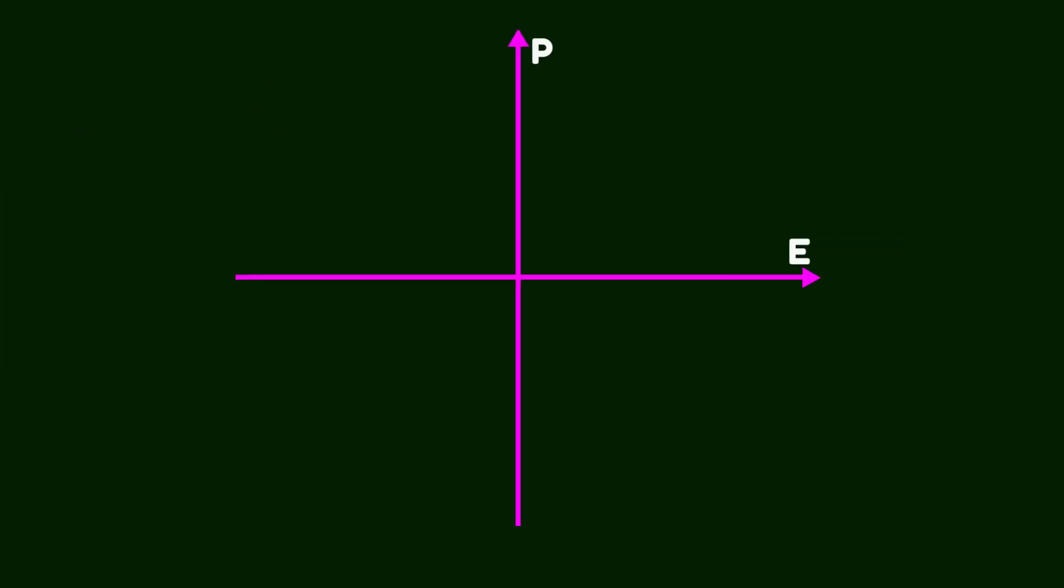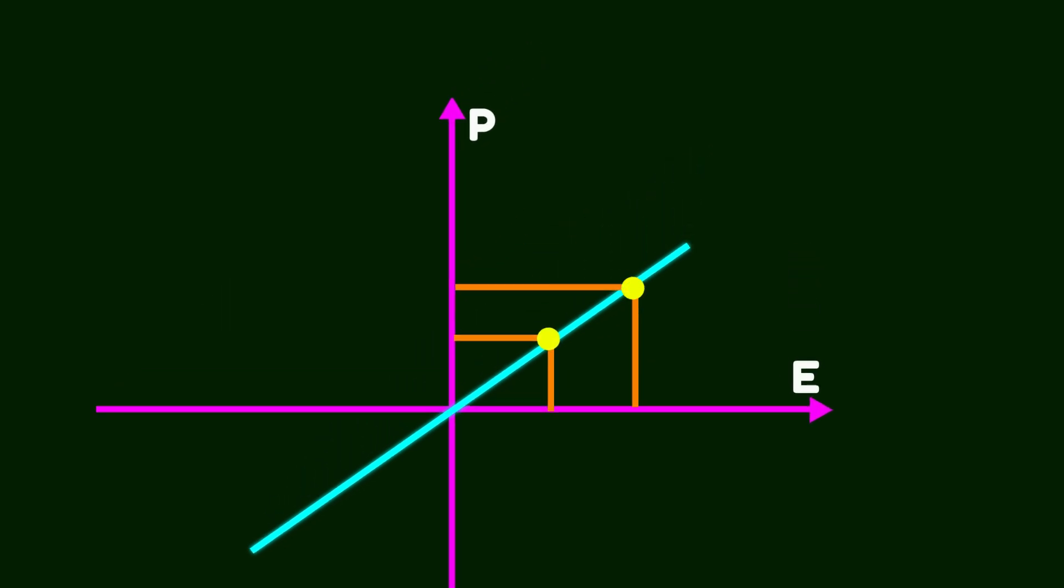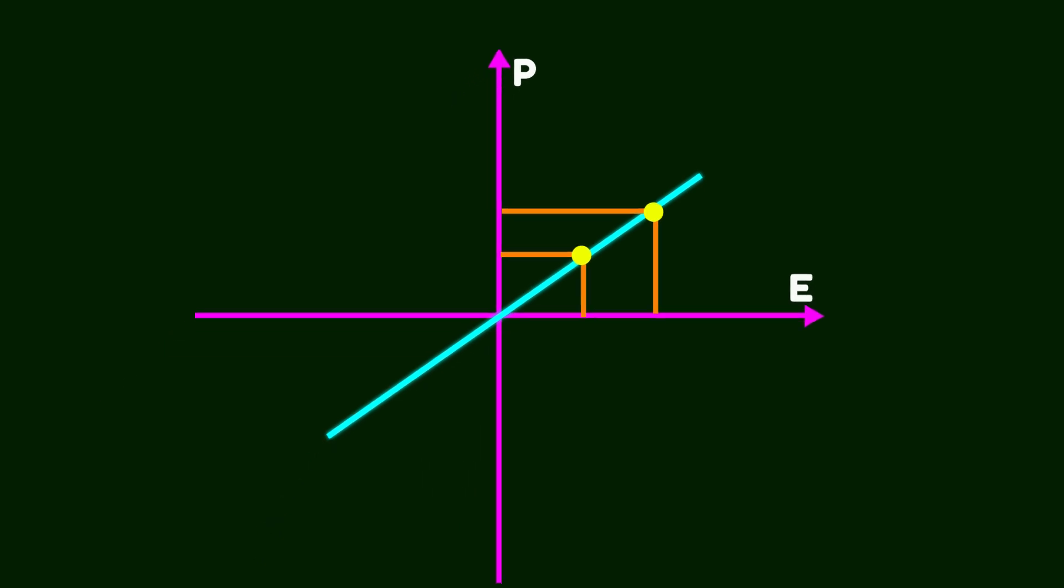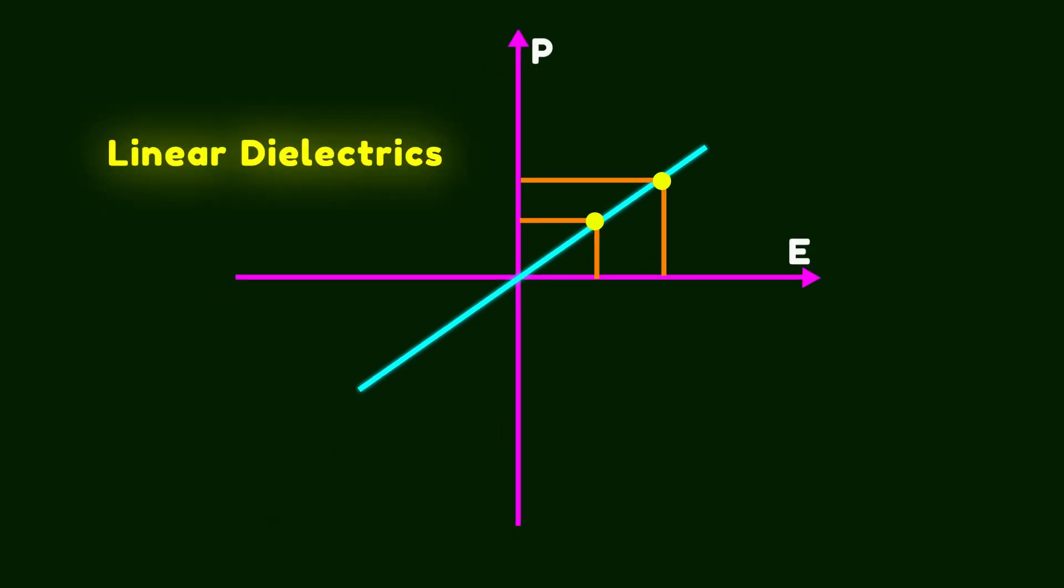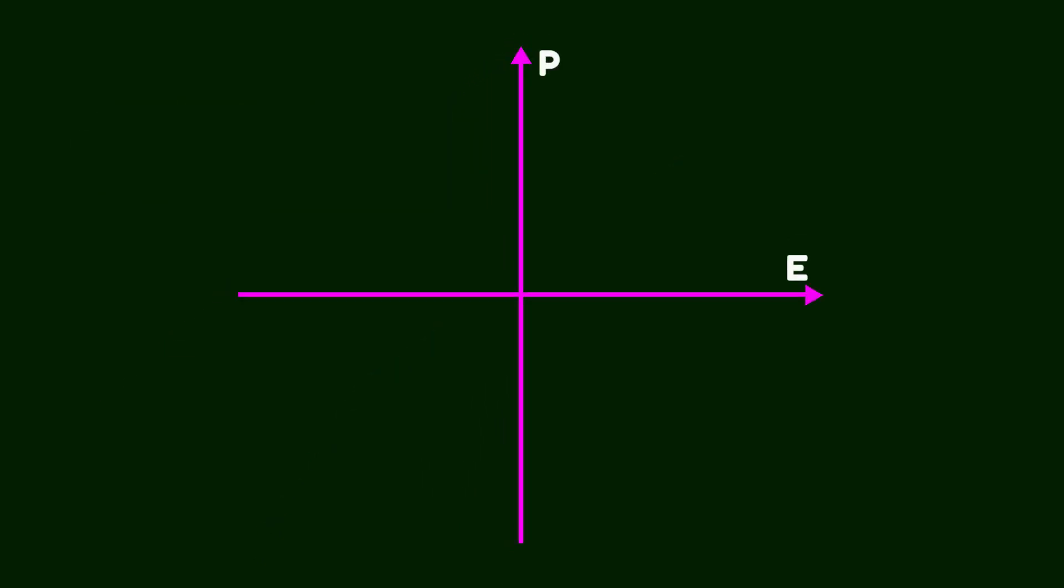In this diagram, the x-axis represents the external electric field and the y-axis indicates polarization. For some materials, there is a linear relationship between the external electric field and polarization. This means the induced polarization is almost exactly proportional to the applied field. These materials are called linear dielectrics. Other materials exhibit enhanced non-linear polarization. In such cases, the slope of the polarization curve is not constant. Unlike linear dielectrics, these materials are called paraelectrics.